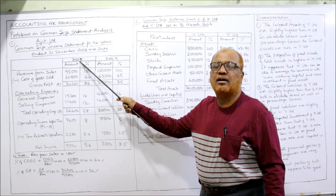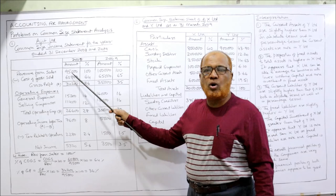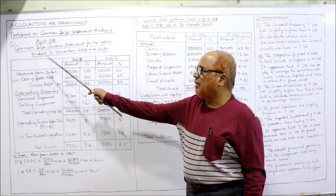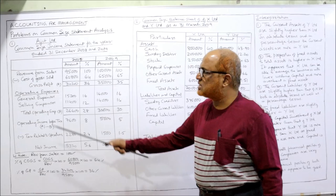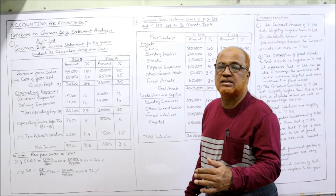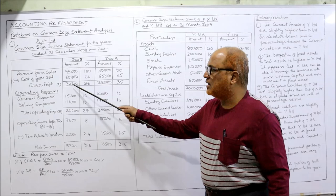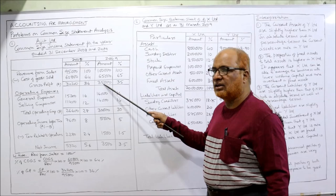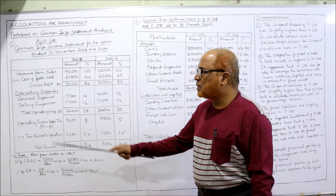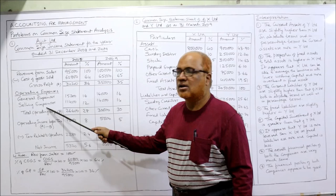The format is copied with two more columns for percentages, which are not given in the problem — we have to calculate them. The heading is: Ajit Limited, Common Size Income Statement for the year ended 31st December 2008 and 2009. Make two broad columns — one for 2008 and one for 2009 — each with sub-columns for amount and percentage. The first column is 'Particular'. Revenue from sales, less cost of goods sold, gives gross profit.